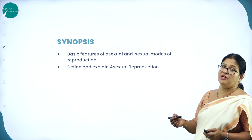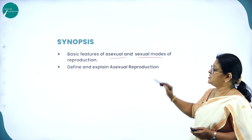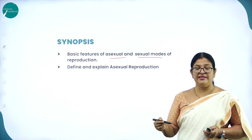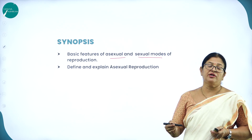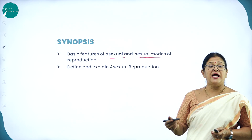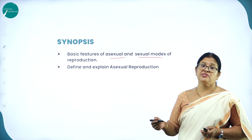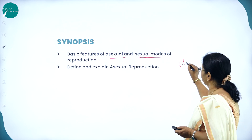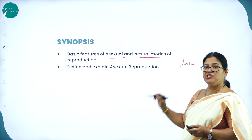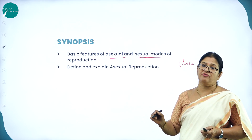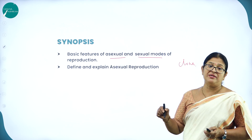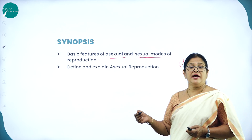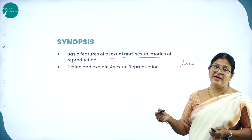In this chapter, you will study the basic features of asexual and sexual modes of reproduction. Asexual reproduction is uniparental — only one parent is involved — and the offspring are genetically and morphologically identical, hence called clones. In sexual reproduction, two parents of opposite sex are involved, and fusion of gametes results in a zygote, which undergoes embryogenesis to develop into an individual.